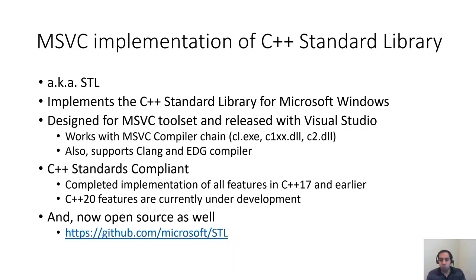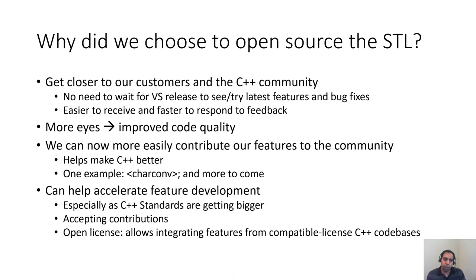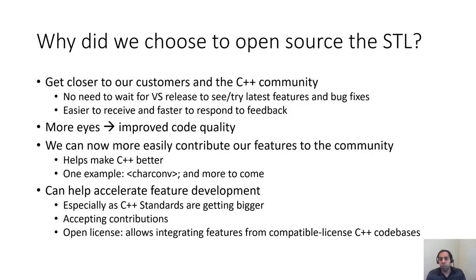I'd like to talk about the move to open source development on GitHub. Last year, specifically at the same time as CppCon 2019, we announced our move to open source development. Moving to GitHub does not mean we reduced our contribution to the STL's implementation. On the contrary, we are putting in a lot more resources to support this transition and will continue to implement C++ standard features. Why did we choose to open source the STL? First and foremost, we wanted to get really close to our customers as well as the C++ community. STL users will no longer need to wait weeks or months to get fixes or find out if features have been implemented — they can track all development in real time.